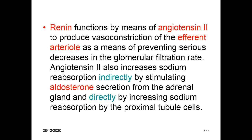Renin functions by means of angiotensin 2 to produce vasoconstriction of the efferent arterioles as a means of preventing a serious decrease in the glomerular filtration rate. Angiotensin 2 also increases sodium reabsorption indirectly by stimulating aldosterone secretion from the adrenal gland, and it directly increases sodium reabsorption by the proximal tubule. So angiotensin 2 is very important for regulation of the glomerular filtration rate and blood pressure.